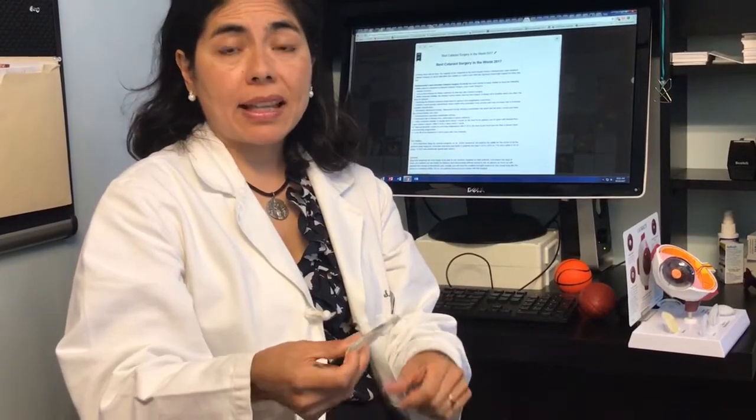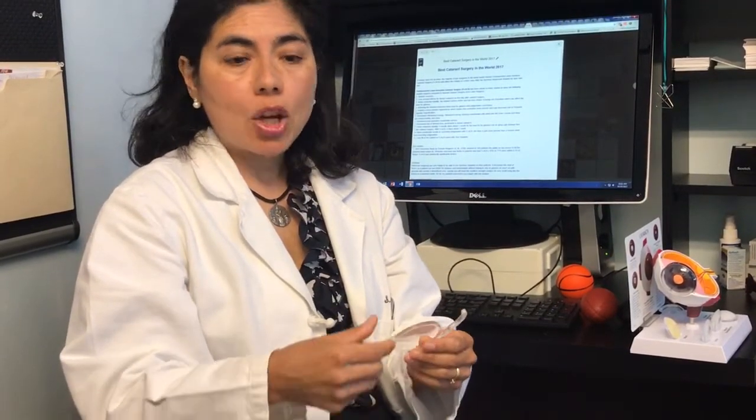The new implant that's come out is called the Symfony, which looks like the monofocal because it doesn't have rings, but it allows you to see distance, intermediate, and reading, and it also corrects the astigmatism at the same time. We've been very excited about this implant.